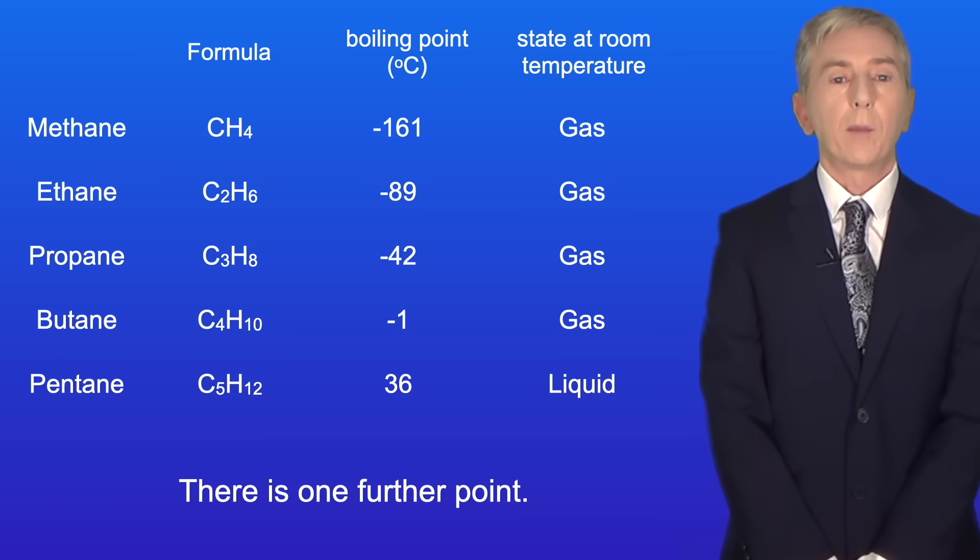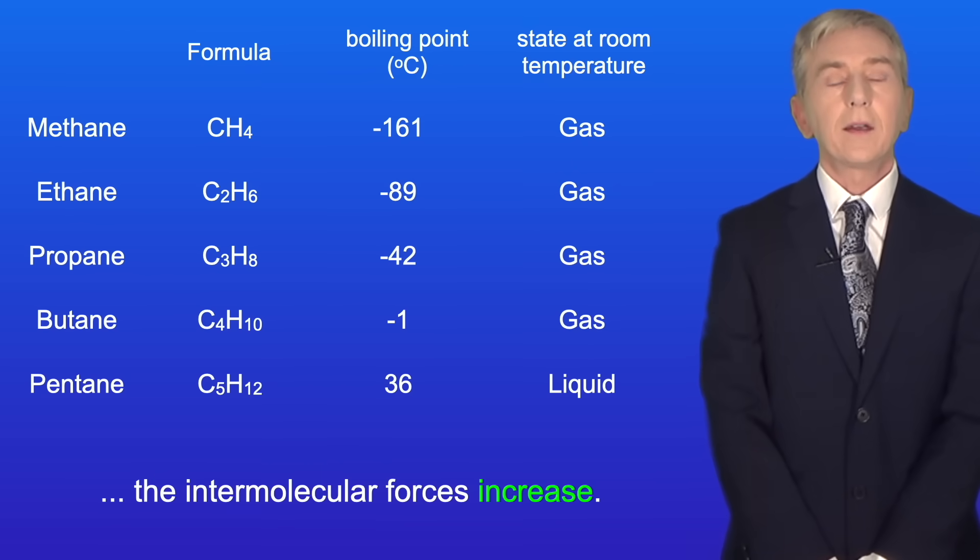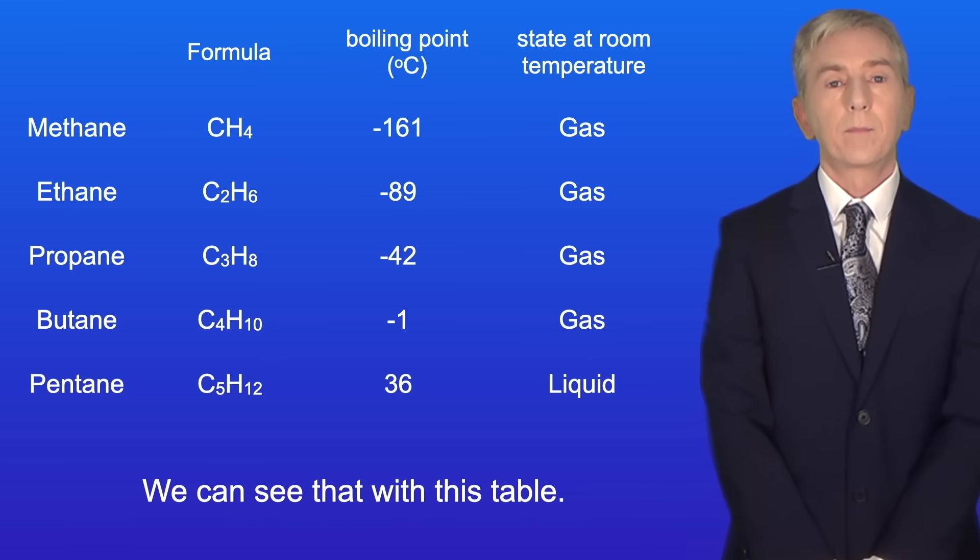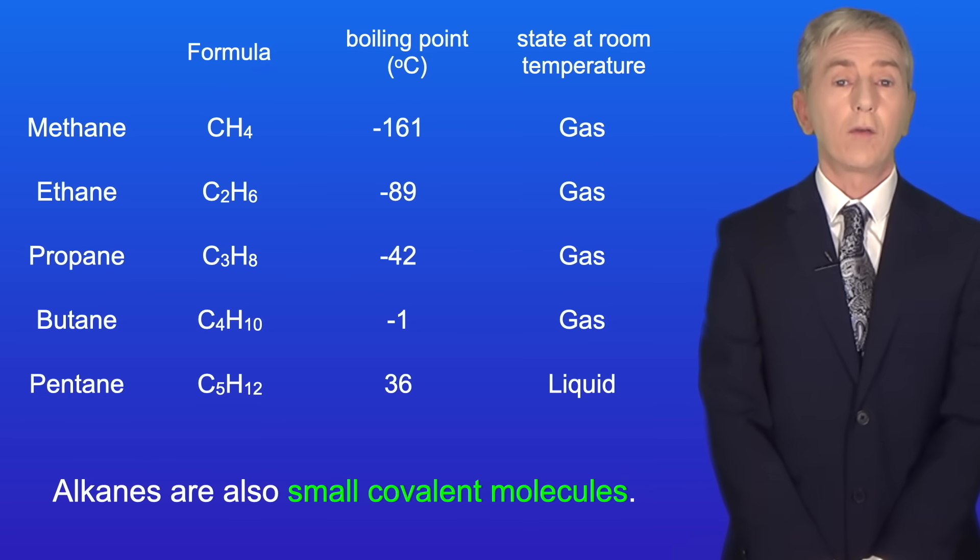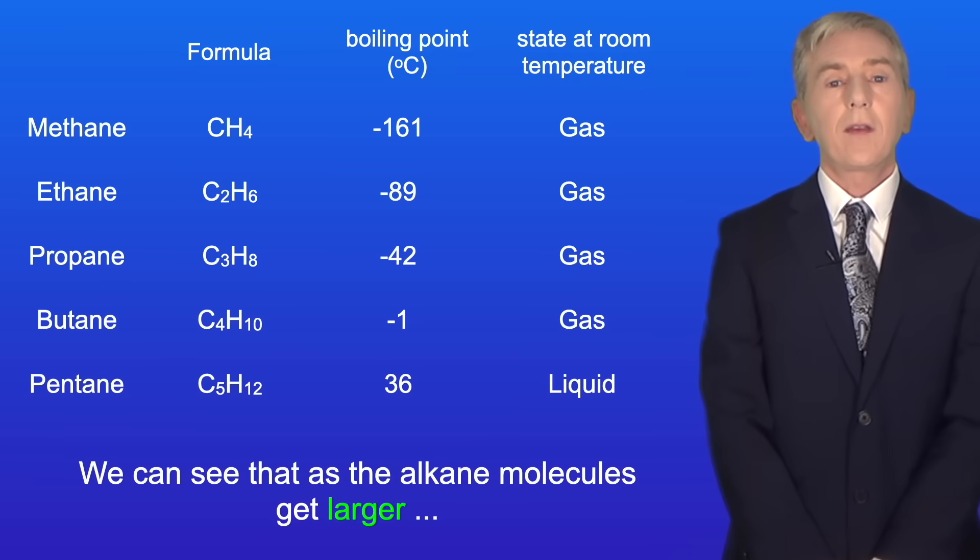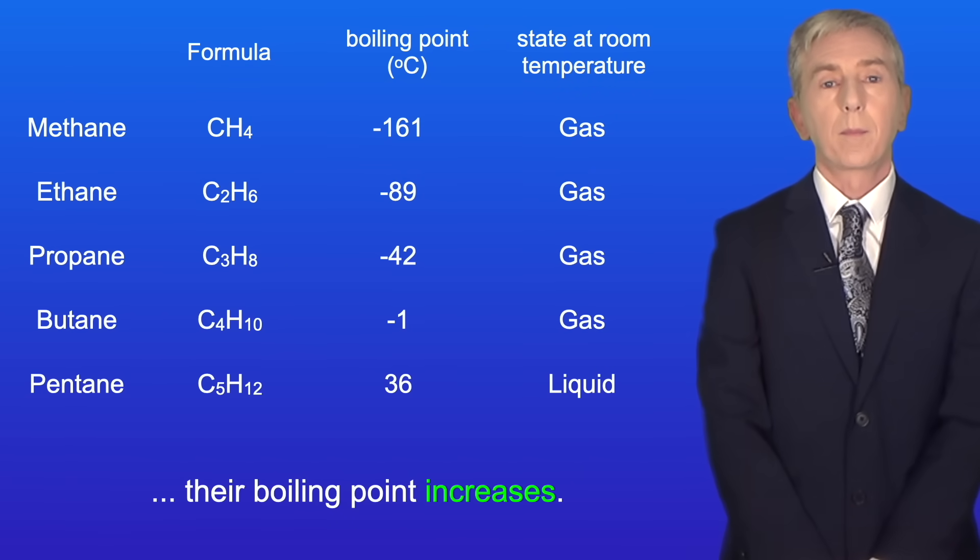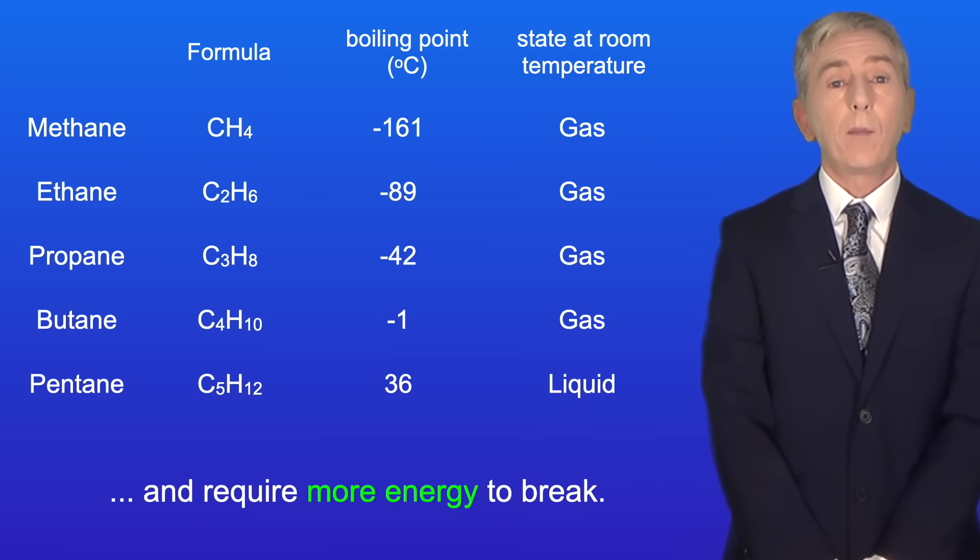Now there is one further point. As we increase the size of the covalent molecule, the intermolecular forces increase. We can see that with this table. This shows the first five alkanes. Alkanes are also small covalent molecules and we're going to see them in more detail in later videos. We can see that as the alkane molecules get larger, their boiling point increases. That's because the intermolecular forces increase and require more energy to break.